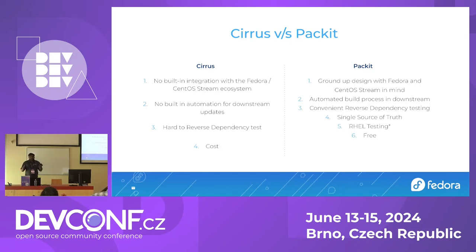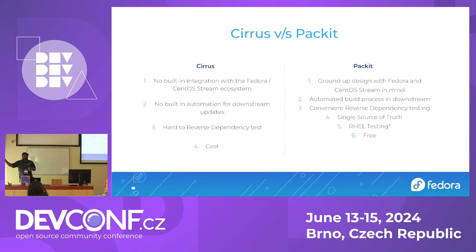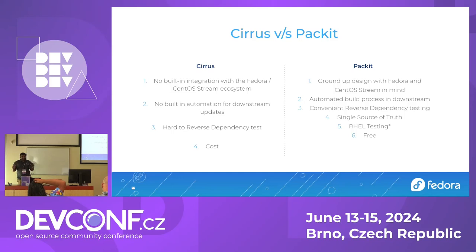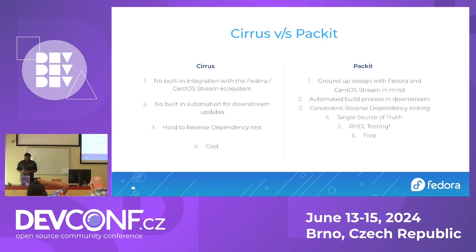There is no automation for downstream building in Cirrus, whereas Packit can automate 99% of things once you create a release upstream to make it available in Fedora or CentOS Stream — with 1% that I can explain later. There is no reverse dependency testing in Cirrus, versus Packit which provides that through TMT. And cost — you have to pay to use Cirrus, whereas Packit is free. There are also advantages like single source of truth and RHEL testing.